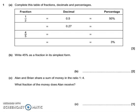Okay, hello everybody, welcome to June 2017, paper 3. We're going to go through question 1. So firstly, we've got to look at writing down the fractions, decimals and percentages here. The first row is done for us, so we'll start with the second row.